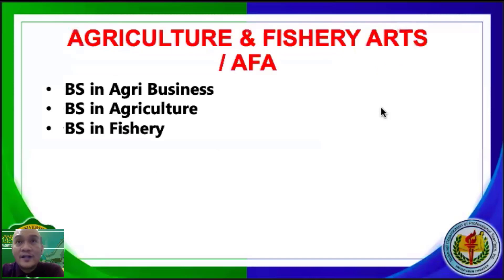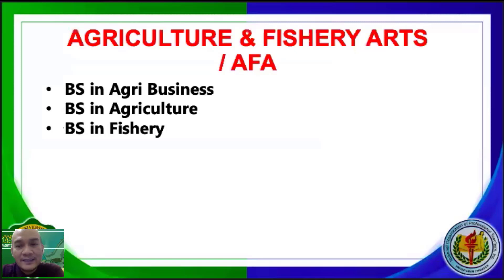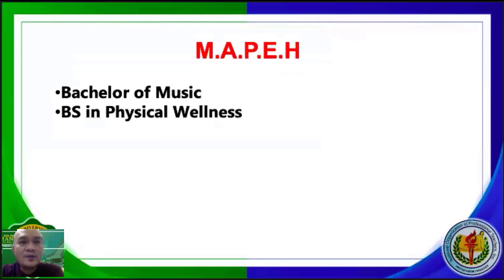For Agriculture and Fishery Arts, or AFA, if you are a graduate of BS Agribusiness, BS Agriculture, or BS Fishery, your majorship is MAPE if you are a graduate of Bachelor of Music, BS in Physical Wellness, or Bachelor in Physical Education.